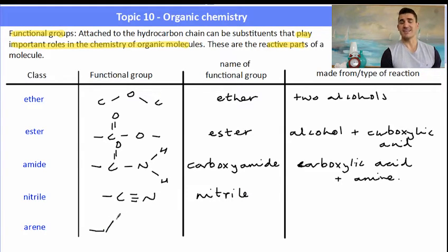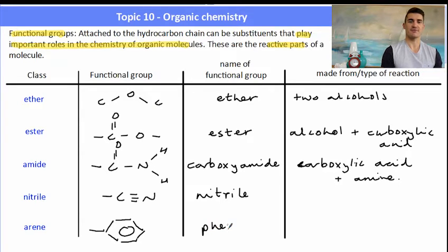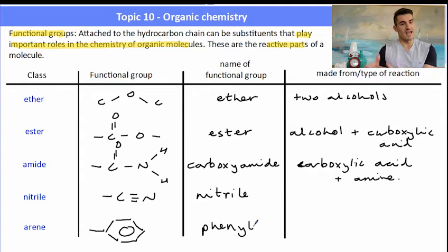An arene is the functional group of a benzene ring. So it's six carbons and five hydrogens, and the functional group is known as a phenyl group. So the class is an arene, the functional group is a benzene ring, but the name of the functional group must be described as a phenyl functional group.